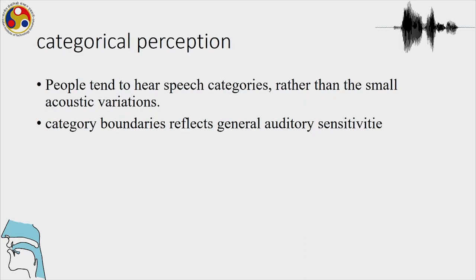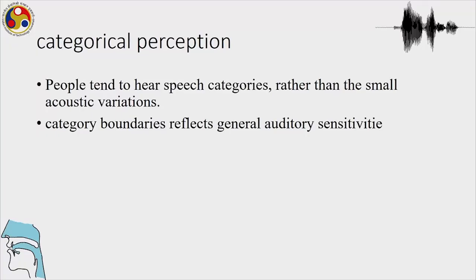To conclude this discussion on categorical perception: people tend to hear speech categories rather than small acoustic variations — that is an ability humans seem to have. There are abilities like categorical speech perception which help us to perceive speech, and there are certain auditory sensitivities we have such that the category boundaries reflect our auditory abilities.